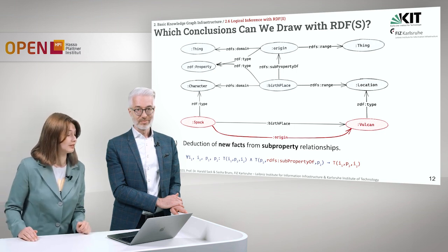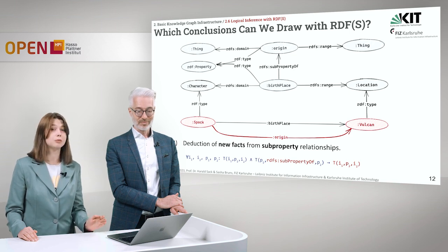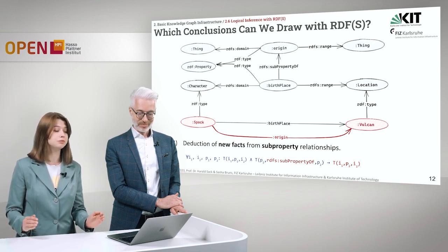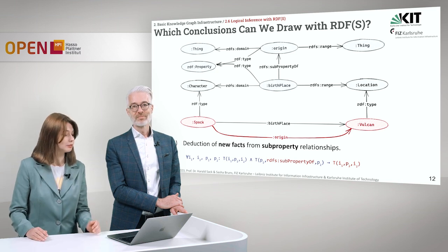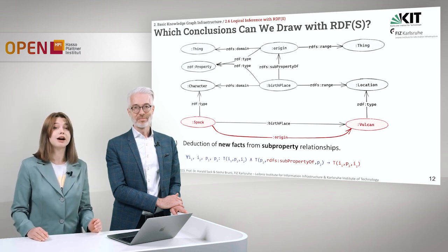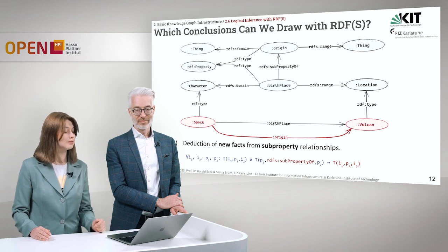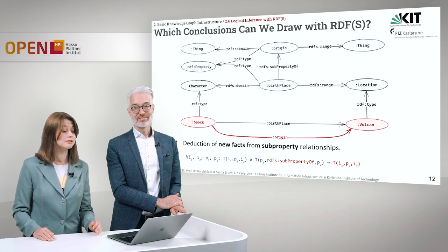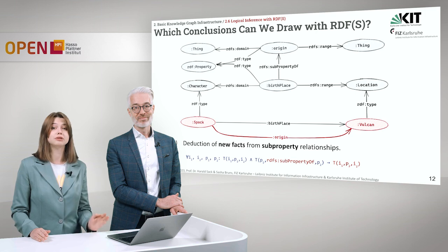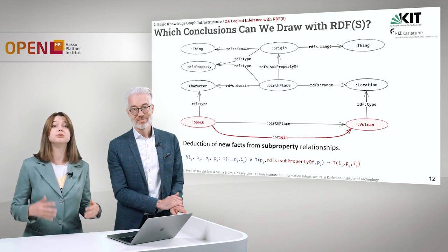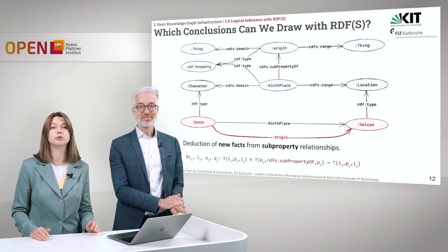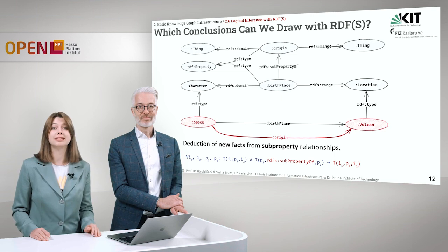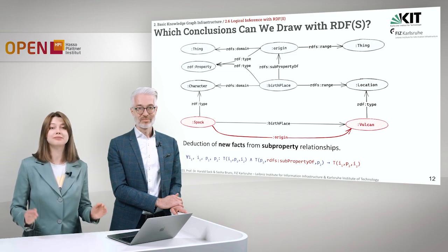Let's take a look at the formal semantics. For all instances i1 and i2, and for properties p1 and p2, if there is a triple that connects i1 and i2 via p1 and p1 is a subproperty of p2, it follows that there is a triple where i1 is connected to i2 via p2. Reasoning is very helpful when we want to deduce new knowledge — to make explicit what hasn't been mentioned explicitly in the graph.